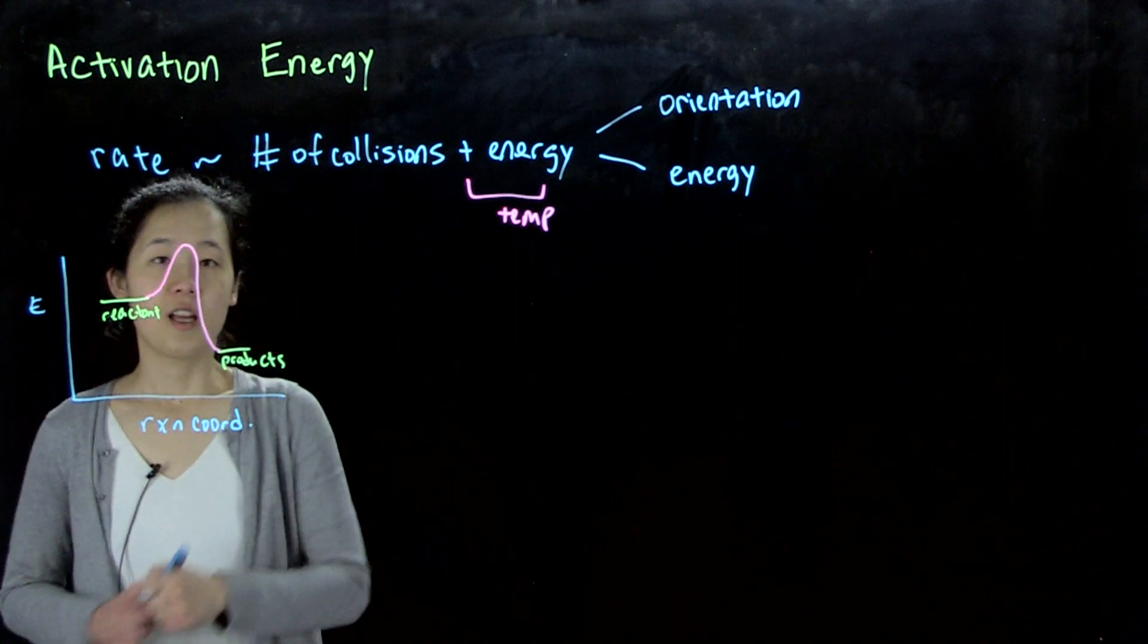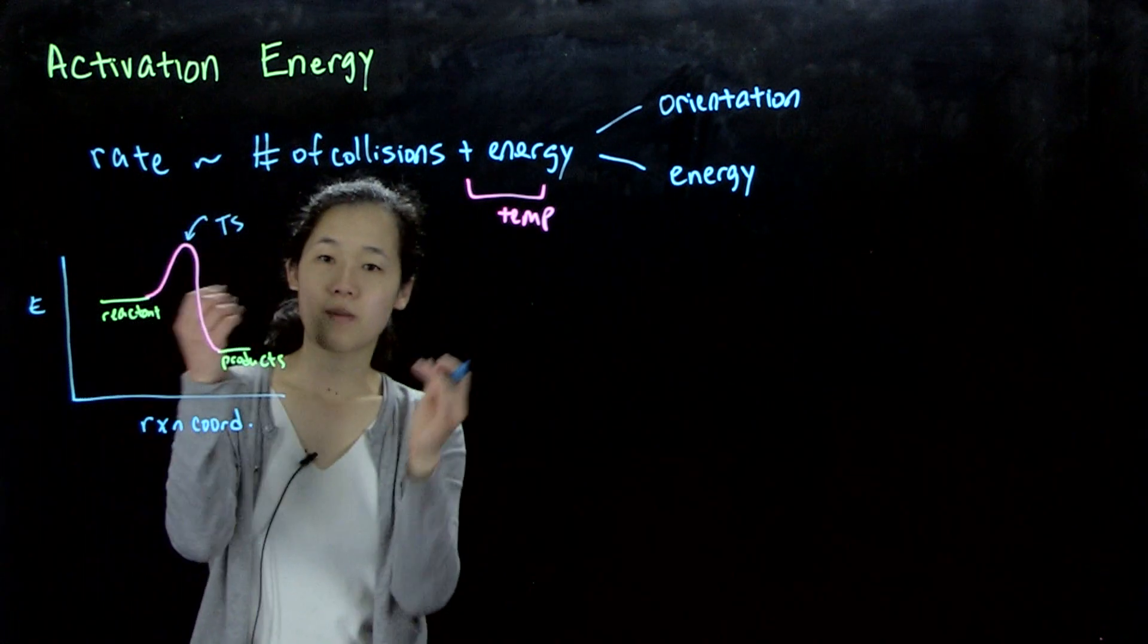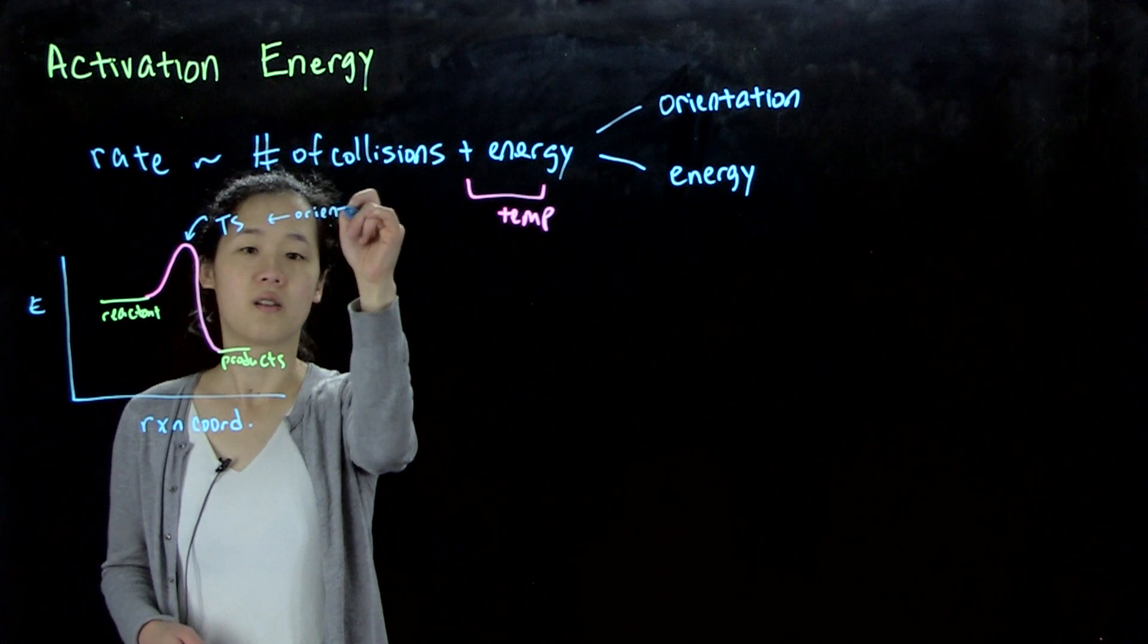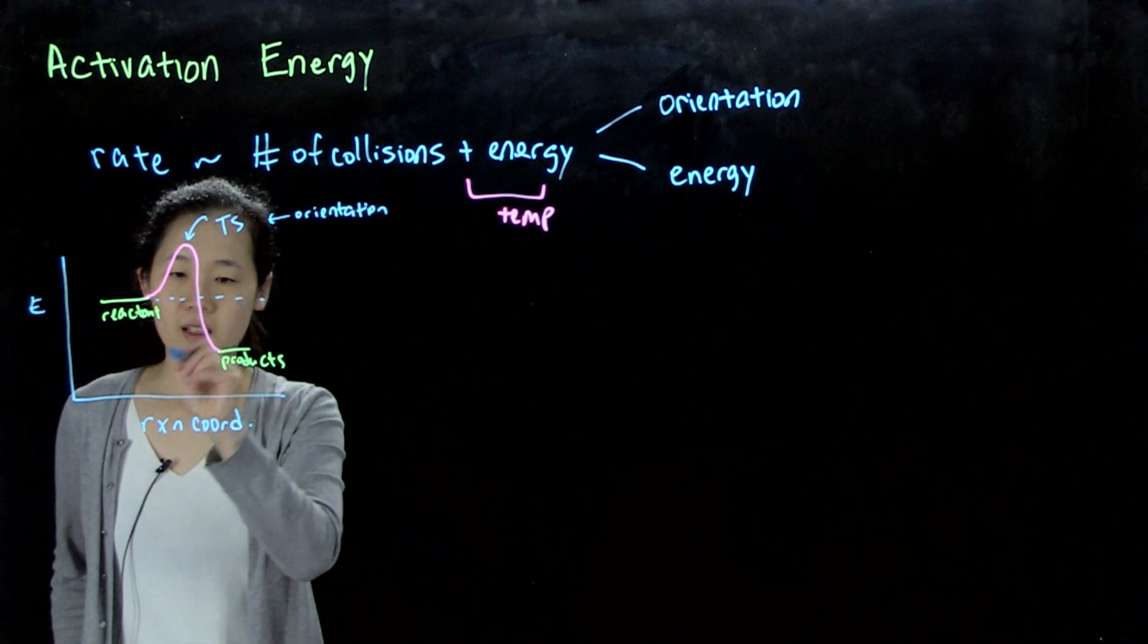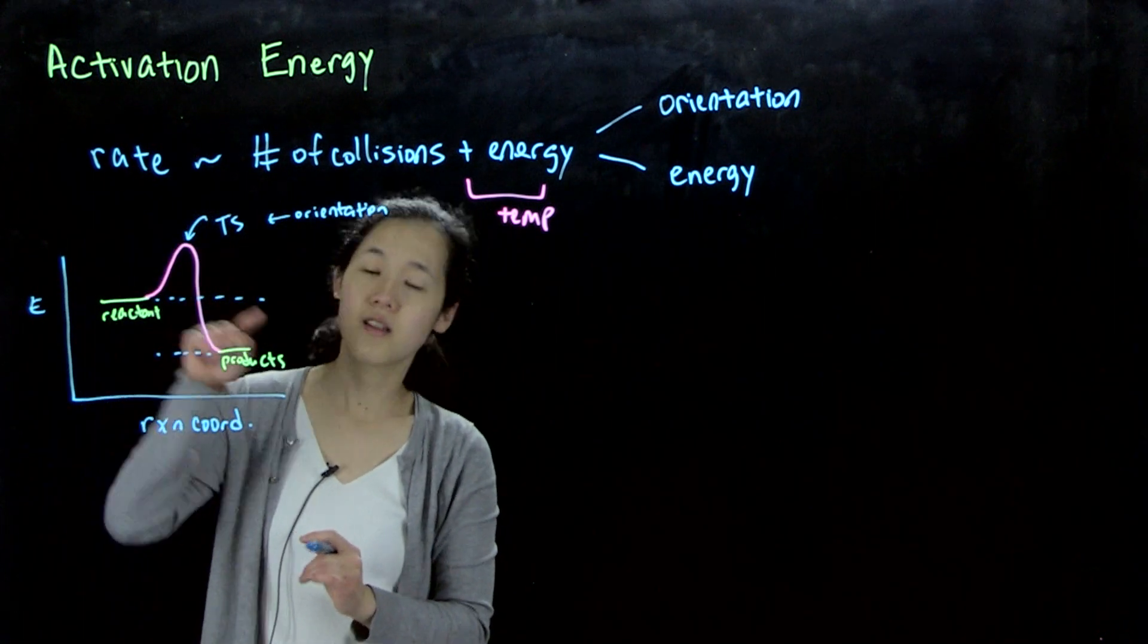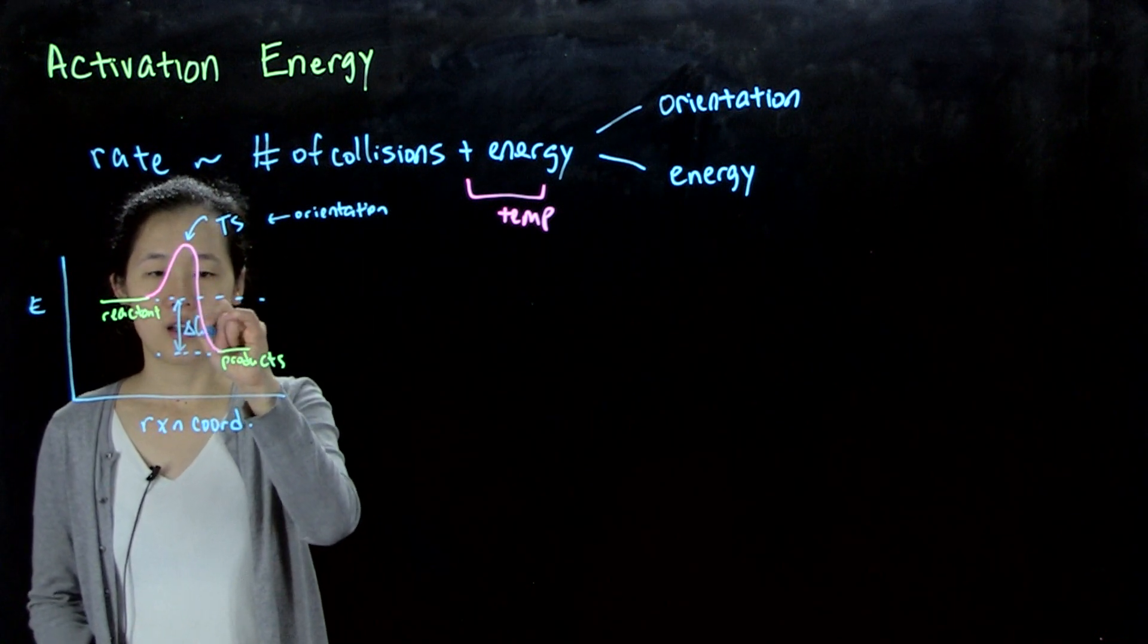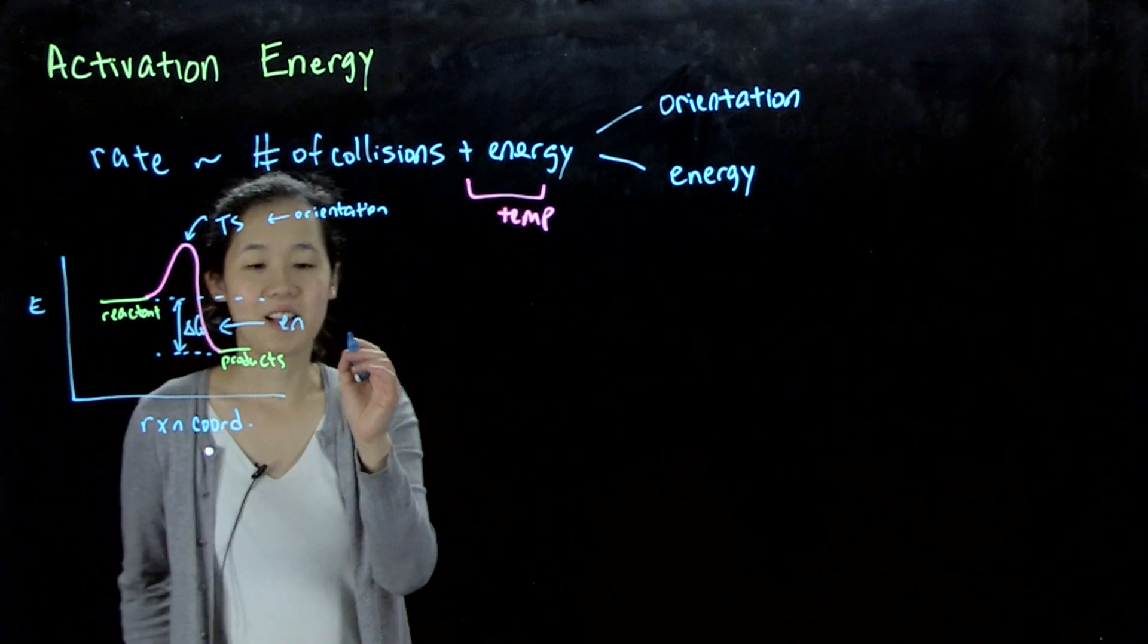So critically, this is the transition state. So this is when the molecules have to be in the right orientation. So this is the orientation. And then this is thermodynamics. So the difference in the free energy between the reactants and the products is what we've seen before as delta G. And then this tells us whether it's endergonic or exergonic.